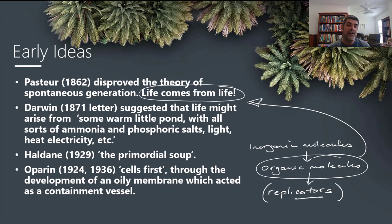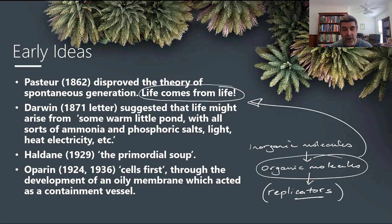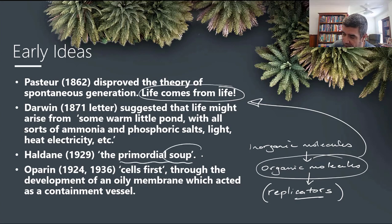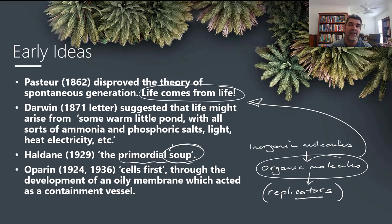Darwin also suggested that life might have arisen from some warm little pond with all sorts of ammonia and phosphoric salts, light, heat, electricity, and so on. More closely related to the experiments we're going to talk about are the ideas of Haldane and Oparin. Haldane's idea was the idea of a primordial soup — a liquidy substance with a number of different types of substances within it — and that that combination of things together was where we started this whole process of organic evolution.